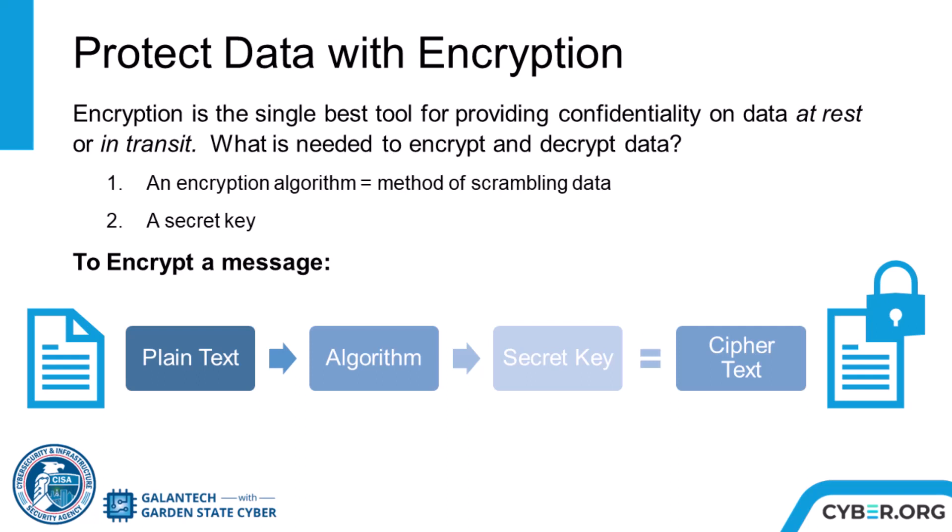But how does this work? First, we take the plain text data, put it into the encryption algorithm, and apply a key — which can be a password, a number, or a long string of characters — and this produces encrypted data. To reverse this, we must know the correct algorithm and the correct key in order to get decrypted data.